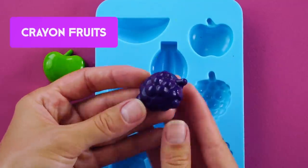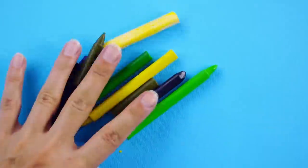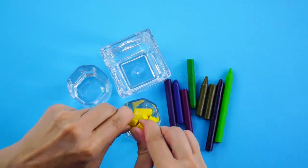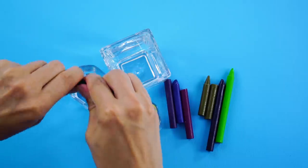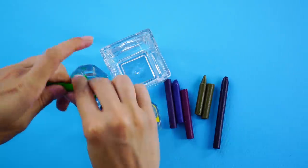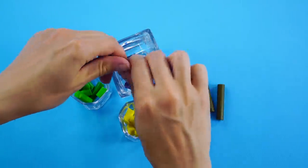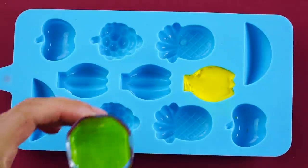Crayon fruits. Want to make crayons in the shape of fruit? Let's do it! Peel the paper off your crayons and place them into glass containers.